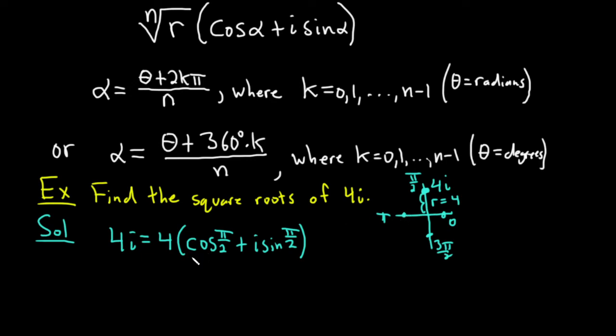So that's the polar form. So now we just have to use the formula. So we need the nth root of r. So n here is 2 because we're looking for square roots. So the square root of r, r is 4, is 2. And so now we just need to figure out alpha.